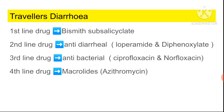The second line drug is an antidiarrheal or opiate analog — loperamide (Imodium) or diphenoxylate. Focus on the stem asked in the exam. If they ask for the third line drug, or ask what is the drug of choice for antidiarrheal-resistant traveler's diarrhea, the answer will be the antibacterials ciprofloxacin and norfloxacin.